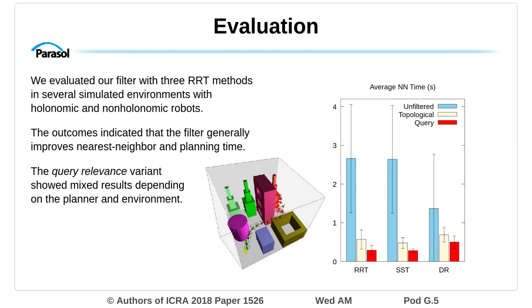We evaluated our filter with three RRT methods in several simulated environments with holonomic and non-holonomic robots. The outcomes indicated that the filter generally improves nearest neighbor and planning time. The query relevance variant showed mixed results depending on the planner and environment.